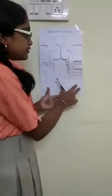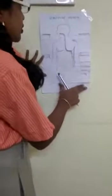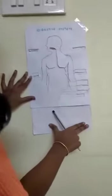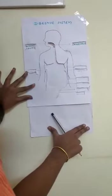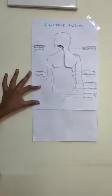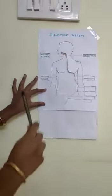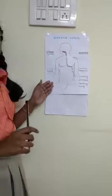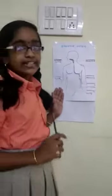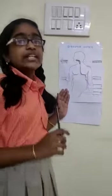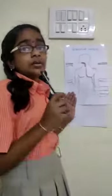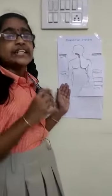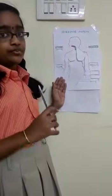The first part of the alimentary canal is the buccal cavity. The buccal cavity includes teeth, tongue, and saliva. Teeth help to chew, bite, and grind the food.